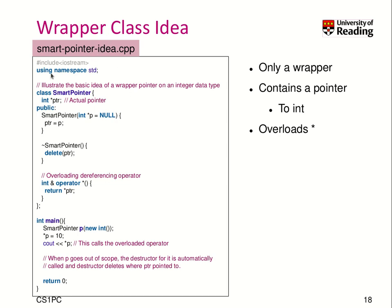Let's look at a very simple version of smart pointers. Here we see on the left-hand side a class smart pointer with a private member — a pointer to an integer. As a public interface, we have the constructor which takes a pointer to an integer and assigns this internal pointer to it. When we reach the destructor, we delete the pointer. We also overload the star operator, which returns a reference to an integer, because this object should look like an integer pointer.